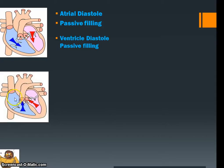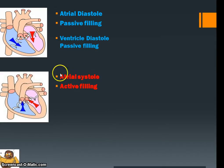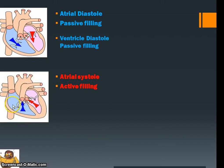As the stages move on we'll have atrial systole — we know it's happening in the atria, and this is the systolic phase, therefore it is active. There will be a contraction of the heart removing the remaining blood from the atria down into the ventricles. Once this area is full of blood, the valves will close up.